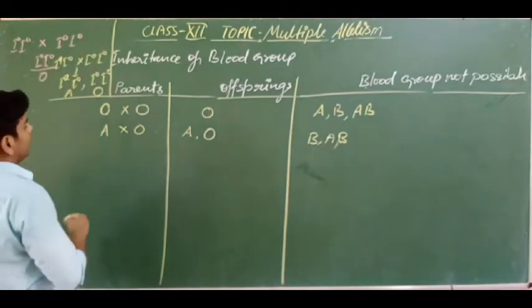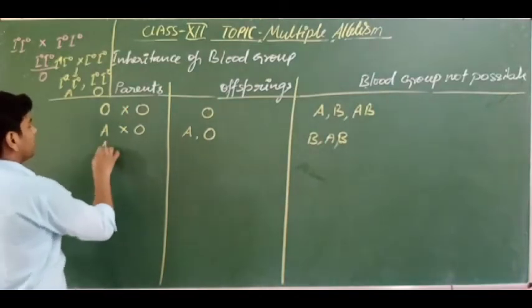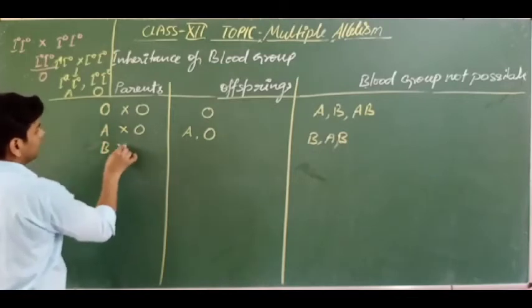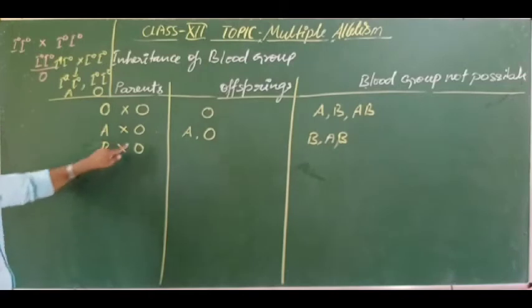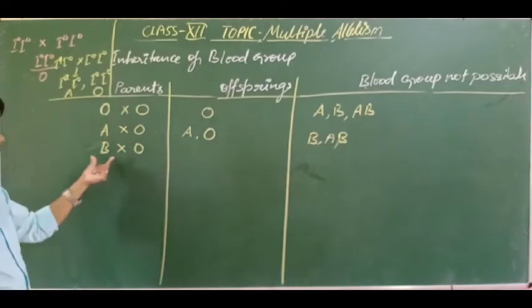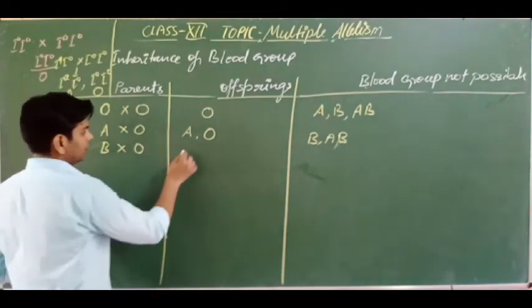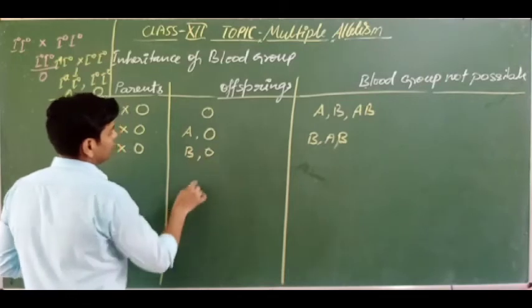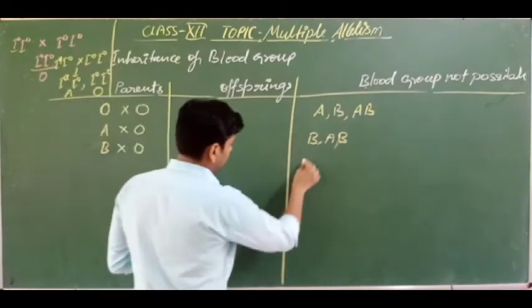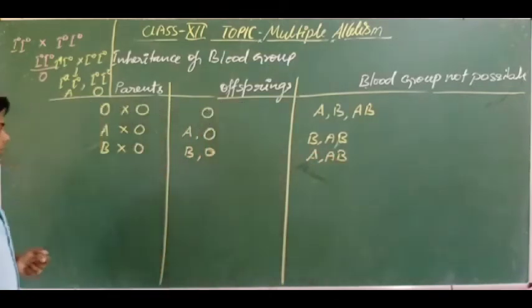Third case: if one parent has blood group B and the other has blood group O, the possible blood groups in offspring are B and O. The impossible blood groups are A and AB.